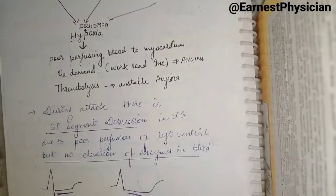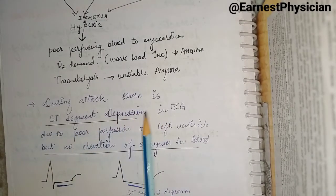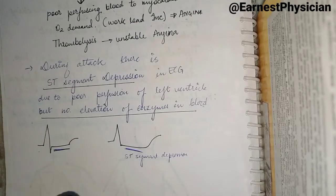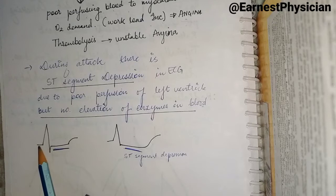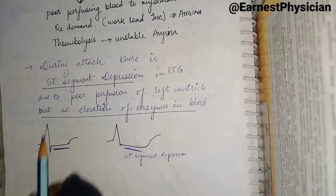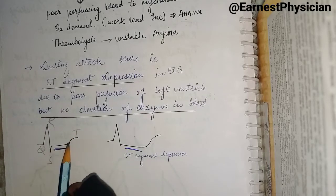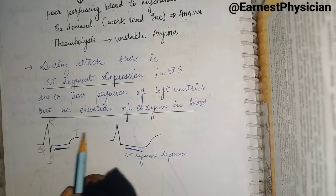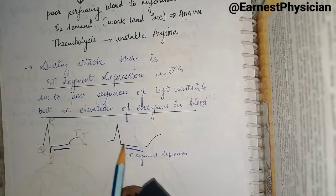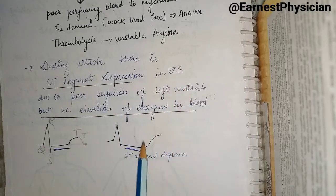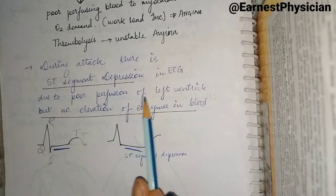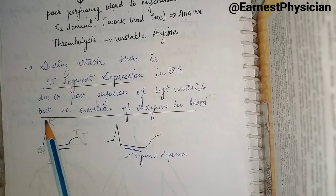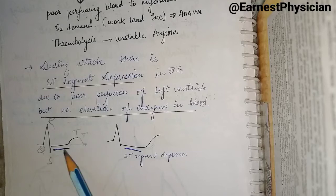During an attack, we see ST segment depression on ECG. If you have studied ECG earlier, this will be easy to understand — there is a video available on ECG step-by-step, basic to final. The QRS complex has Q, R, S, and T wave, and this is the ST segment. If there is depression, you can see it on the ECG. The reason is that blood is not being perfused to the left ventricle. Additionally, cardiac enzymes are not elevated in angina — unlike in myocardial infarction where they are increased. So ST segment depression is present, but cardiac enzymes are not elevated.